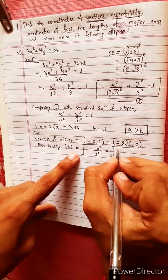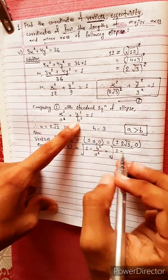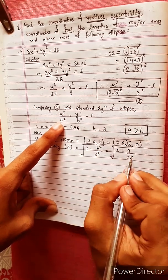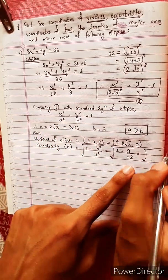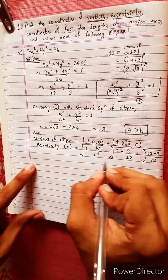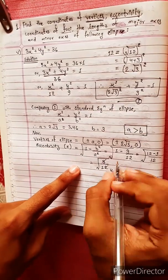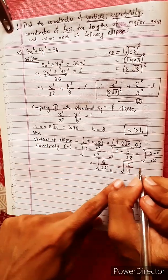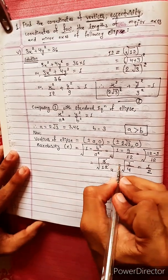For eccentricity, c² equals a² minus b². So c² equals 12 minus 9 equals 3, giving c equals √3. Then eccentricity e equals c/a equals √3 divided by 2√3, which equals 1/2.